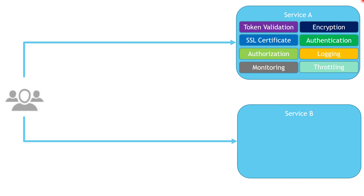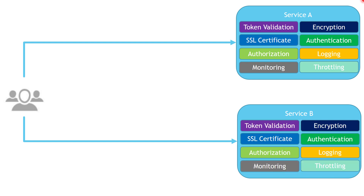Finally, we have the monitoring feature. We need a strong monitoring mechanism to help us know the performance bottlenecks of our services — how many requests it can process per second, what the top exceptions and faults are, and the availability percentage. All of these features need to be implemented in Service A in addition to its main business logic. Not only that, we will have to re-implement all of these features across all services in our system, which is a huge amount of effort — and this is one of the challenges the Gateway Offloading pattern is trying to solve.